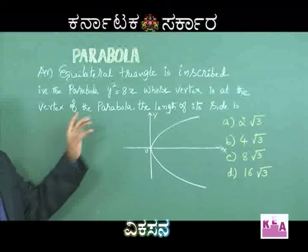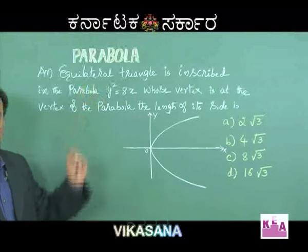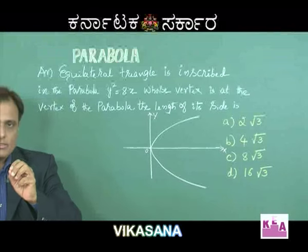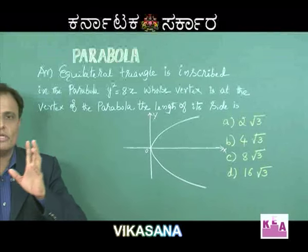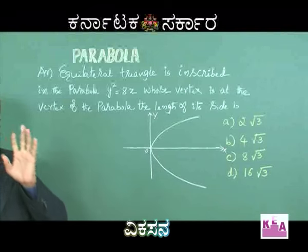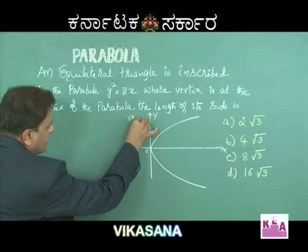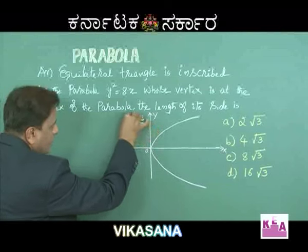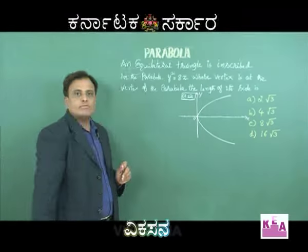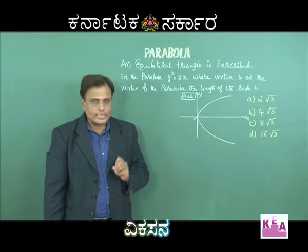Consider the equation of the parabola: y² = 8x, which is in the form y² = 4ax. That means 4a = 8, so a = 2. We now know that the value of a is 2 because the given parabola is y² = 8x.